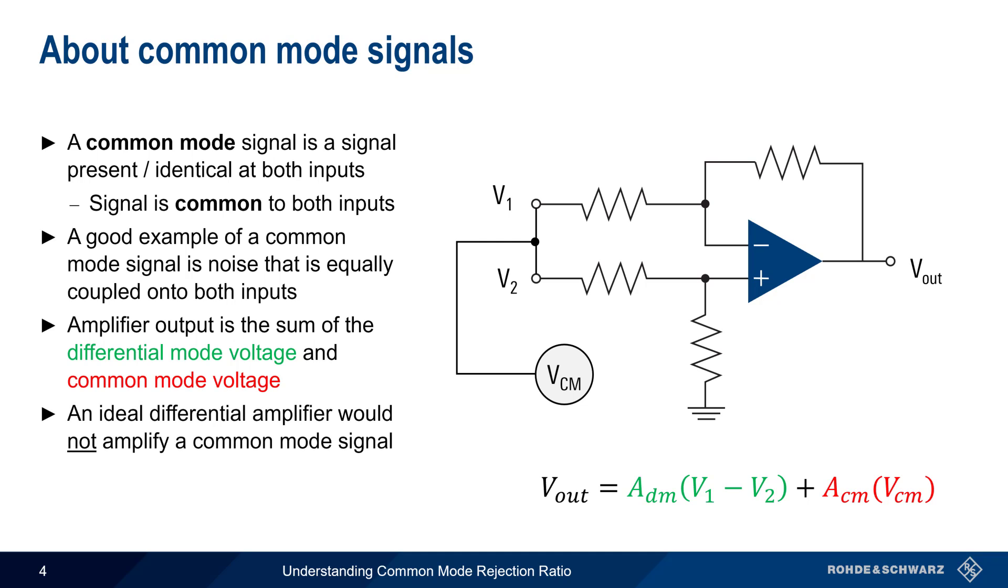An ideal differential amplifier would not amplify the common mode signal. That is, the common mode gain would be zero.